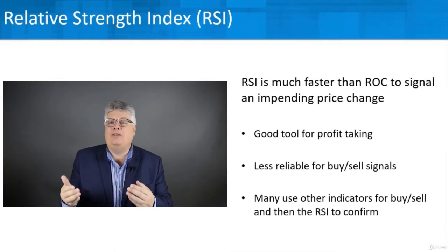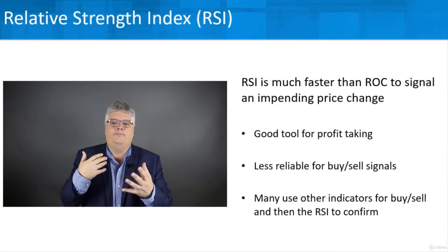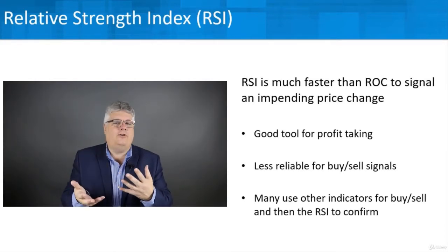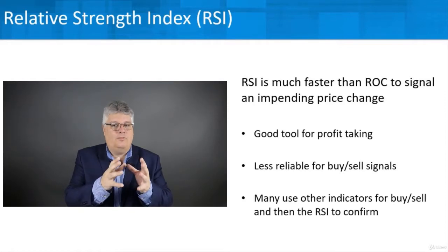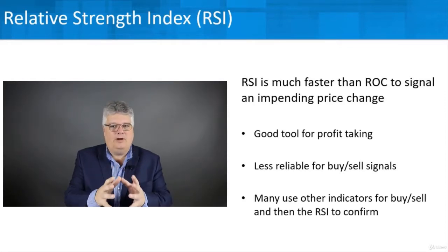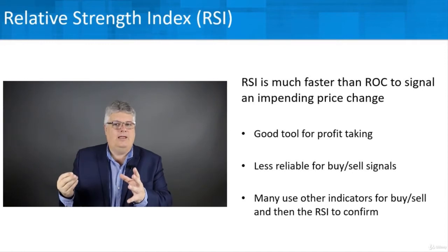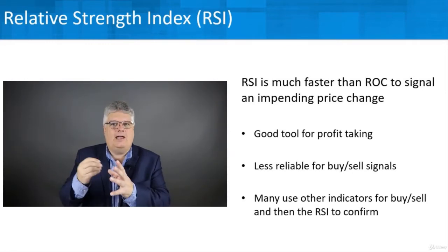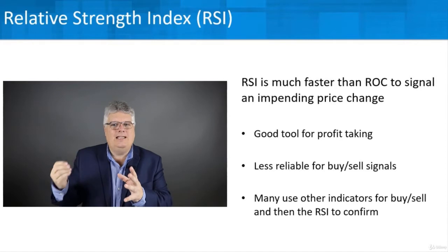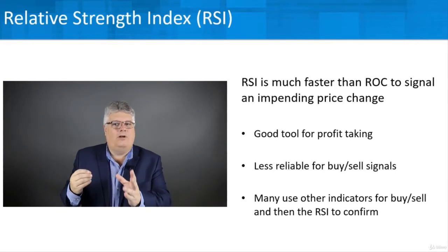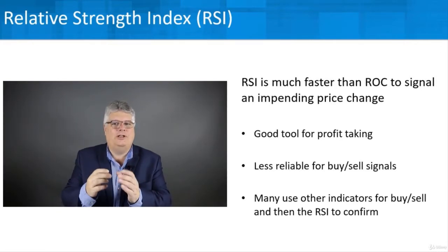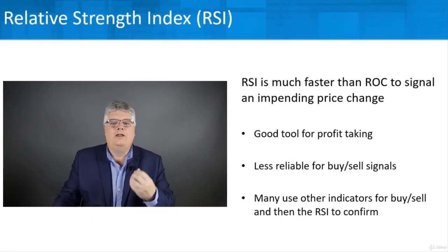It can give you an indication that something's changing, something's coming. So you can use other indicators to determine your buy and sell signal — like, I'm going to buy or sell based on this primary indicator — but then use something like RSI to confirm that. RSI is a little less reliable on its own, but these others are more reliable, so I'll use RSI as an additional confirmation and then make my trading move.